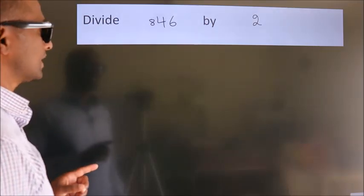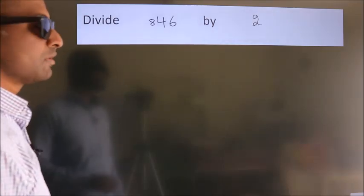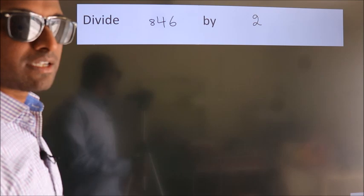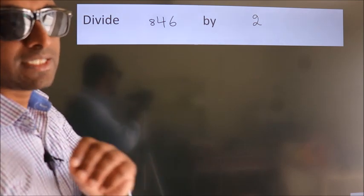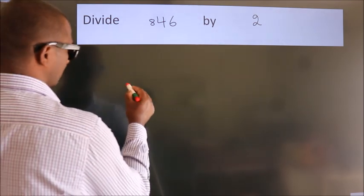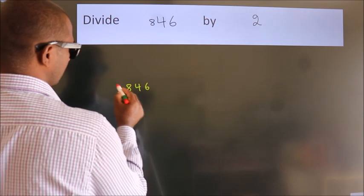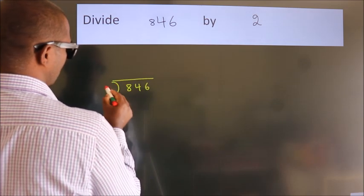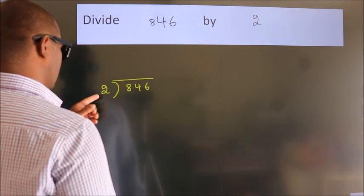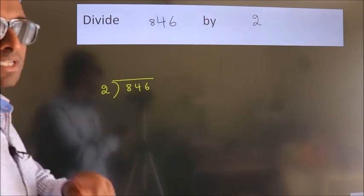Divide 846 by 2. To do this division, we should frame it in this way: 846 here, 2 here. This is your step 1.